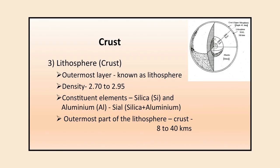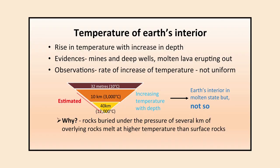The third layer is the crust, or outermost layer, also known as the lithosphere. The density of this layer varies from 2.70 to 2.95. Its constituent elements are silica and aluminium, so it is also called SIAL. It is the outermost part of the lithosphere and ranges between 8 to 40 kilometers in thickness.